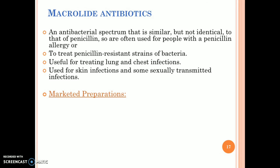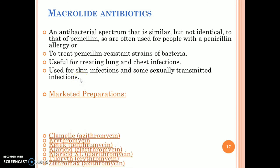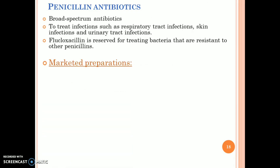Macrolide antibiotics have an antibacterial spectrum similar but not identical to that of penicillin, so they are often used for people with penicillin allergy. They are used to treat penicillin-resistant strains of bacteria, and are useful for treating lung and chest infections, skin infections, and some sexually transmitted infections.